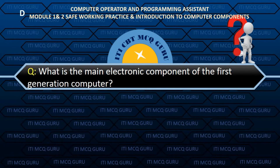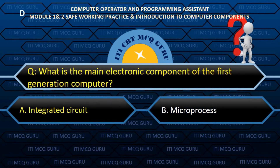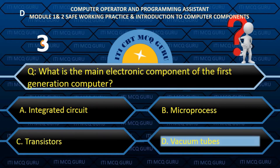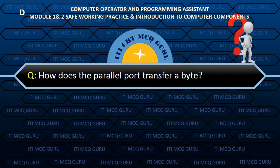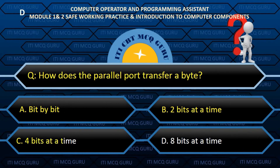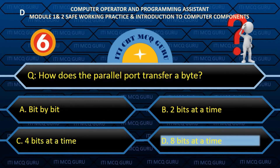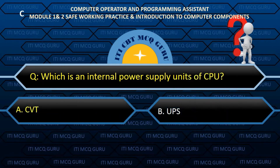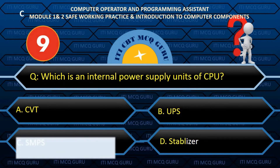What is the main electronic component of the first generation computer? Answer: D. Vacuum tubes. How does the parallel port transfer a byte? Answer: 8 bits at a time. Which is the internal power supply unit of CPU? Answer: C. SMPS.